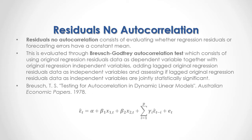As a formula, here we have the example of a multiple regression with two independent or explanatory variables, in which we have that the current period general regression residuals or forecasting errors are equal to a constant, plus a β1 coefficient multiplied by the first independent variable, plus a β2 coefficient multiplied by the second independent variable, plus the sum from the first to the p number of lags to include within the Breusch-Godfrey autocorrelation test, of the corresponding gamma coefficients multiplied by previous periods' original regression residuals or forecasting errors, plus this regression's residuals or forecasting errors.